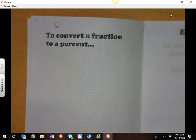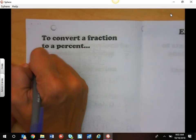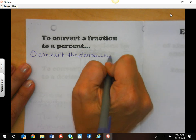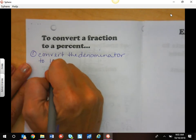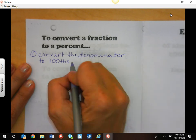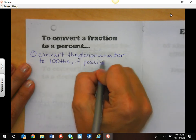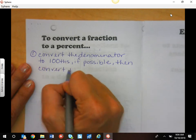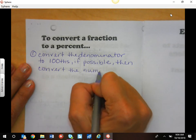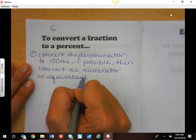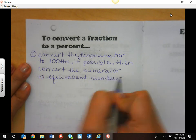To convert a fraction to a percent, we're going to do two things. You're going to first convert the denominator to 100, because percent means out of 100, if possible. Now this is not always a possible thing, but if you can, then do that. And if you can, then you're going to convert the numerator to the equivalent number out of 100.